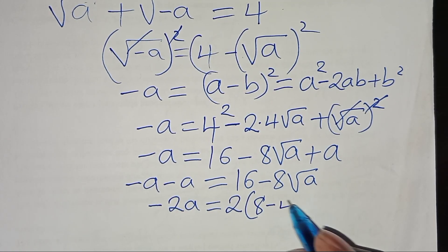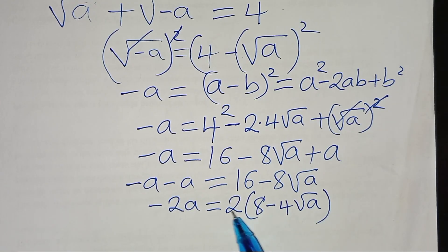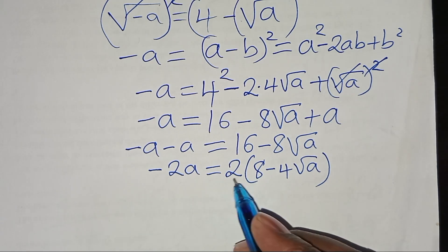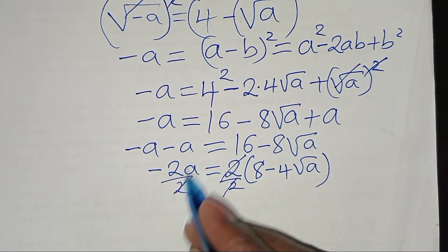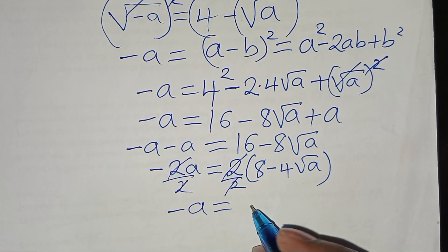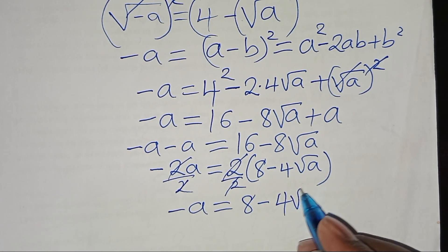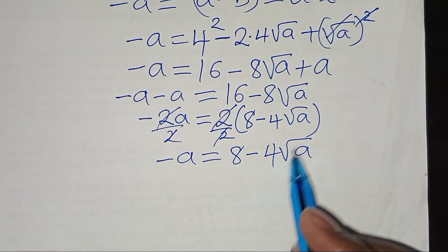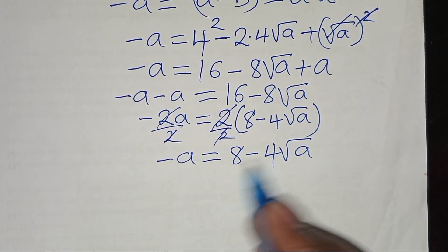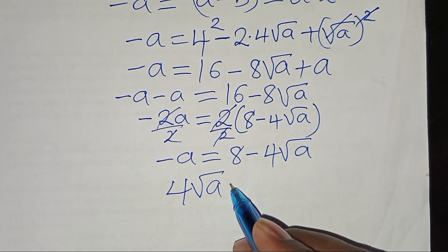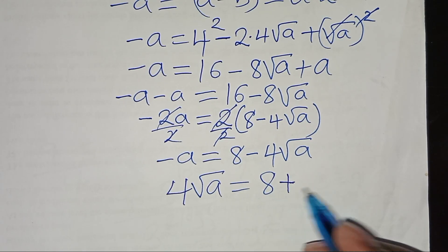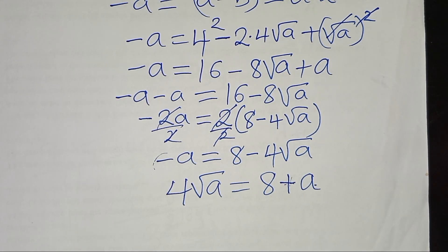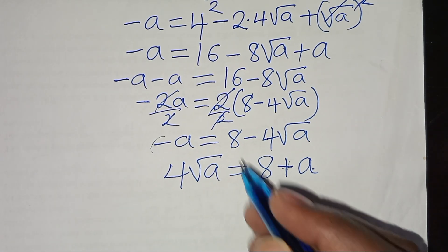Dividing both sides by 2: −a = 8 − 4√a. Rearranging by taking −4√a to the left side: 4√a = 8 + a. We now square both sides again to eliminate the remaining square root.